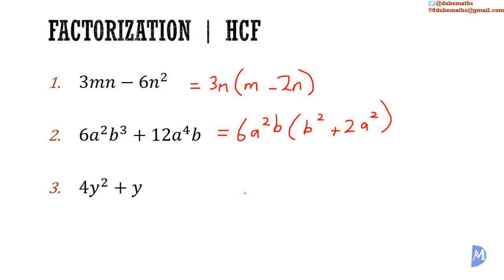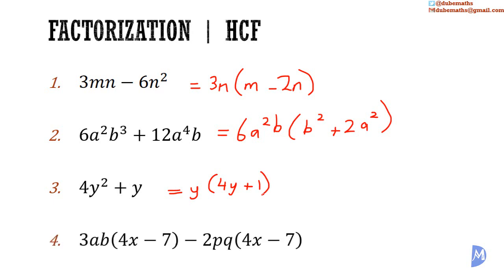Example three: 4y squared plus y. The HCF of 4y squared and y is equal to y. What do I multiply y by to get 4y squared? I multiply it by 4y. What do I multiply y by to get y? I multiply it by positive 1. Factorizing by HCF gives factors of y and 4y plus 1.